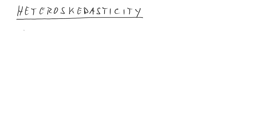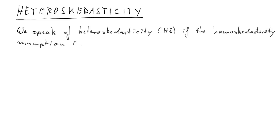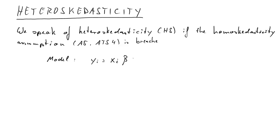In this clip, I introduce the issue of heteroscedasticity. Let's first define what that means. We speak of heteroscedasticity if the homoscedasticity assumption — that's either A5 or some textbook's assumption 4 — is breached.